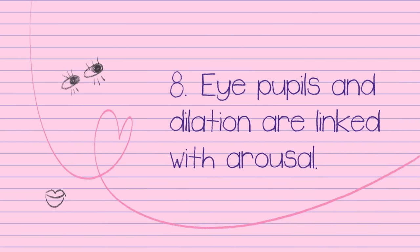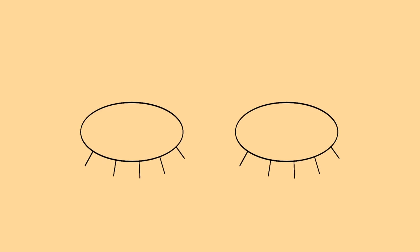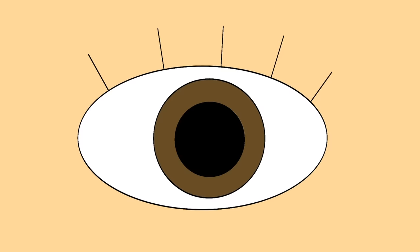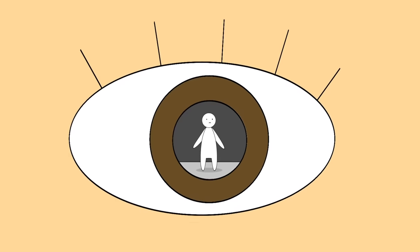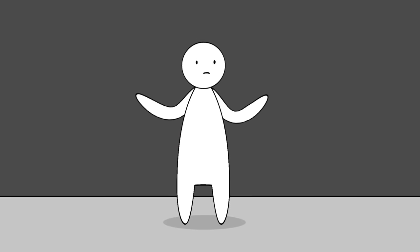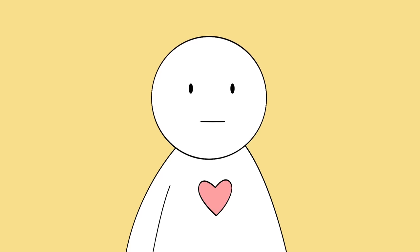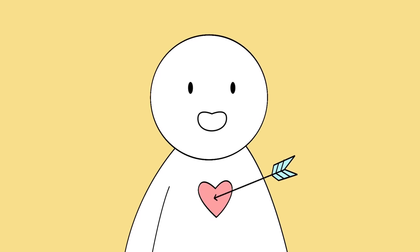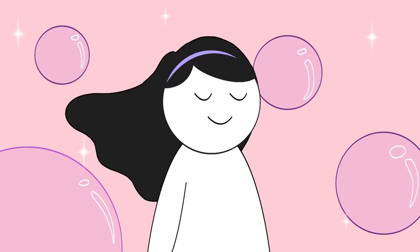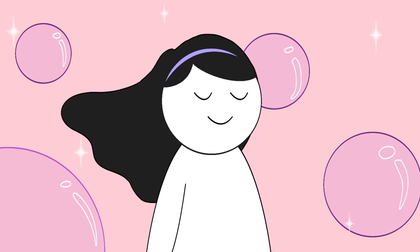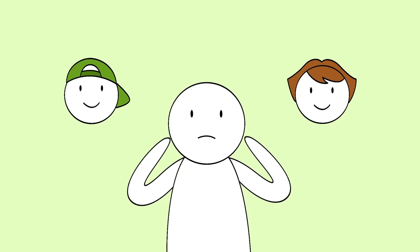8. Eye pupils and dilation are linked with arousal. We all know that eyes are the windows to the soul, but if you stare deep enough into your crush's eyes, you might just get a clue as to whether they're into you. Studies have shown that when people become aroused, their pupils actually dilate. This is actually a pretty good sign of sexual orientation as well. Your eyes will dilate when you look at the gender you are most attracted to.